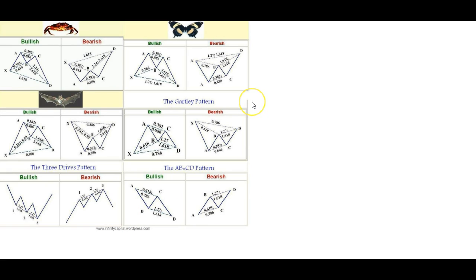The reason I don't generally play harmonics is because I find the targets to be ambiguous and the stop loss to be ambiguous. Generally with Bitcoin, unless you're super experienced with harmonics, you just get bulldozed. So I generally don't use them, but there is some compelling bearish evidence for a nice three drive setup right now. We did have one recently that didn't work out, but let's run through it.